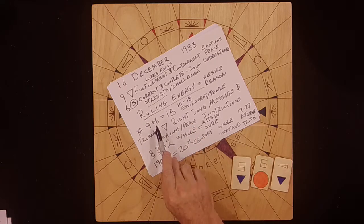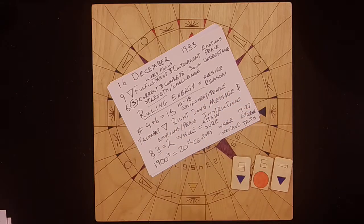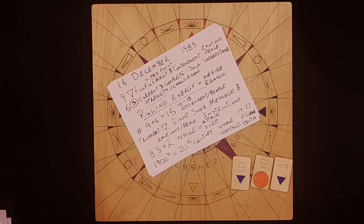And this is what's going on with this day, the ruling energies, the internal energy that's going on. And so that's how this chart is read and that's what's going on for this person for 16 December 1983.